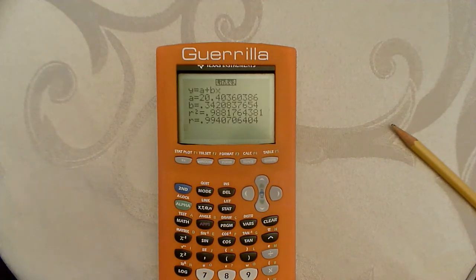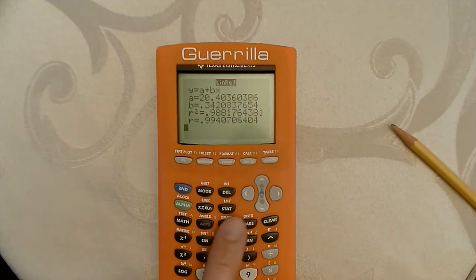And remember too that if you're not getting your r squared and your r value, your coefficient of determination and your correlation coefficients, then you need to go and turn your diagnostic on. Hit catalog, you've got your catalog, go to the Ds, go down to diagnostic on and turn that on.